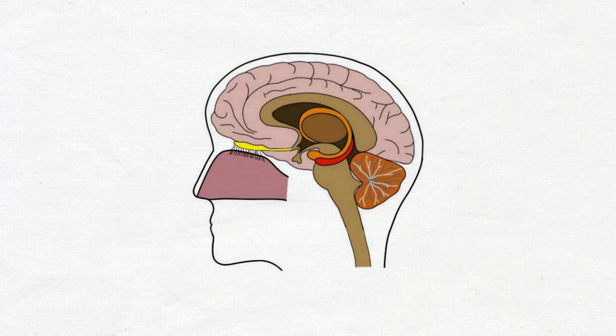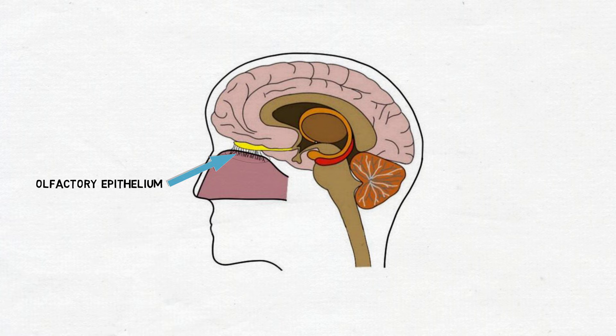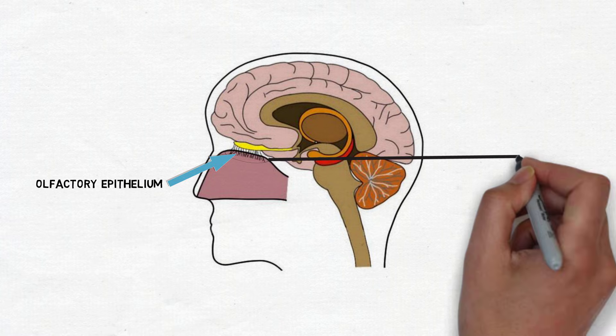Olfaction refers to the sense of smell, which begins with a specialized collection of cells called the olfactory epithelium. In humans, the olfactory epithelium lines the nasal cavities.